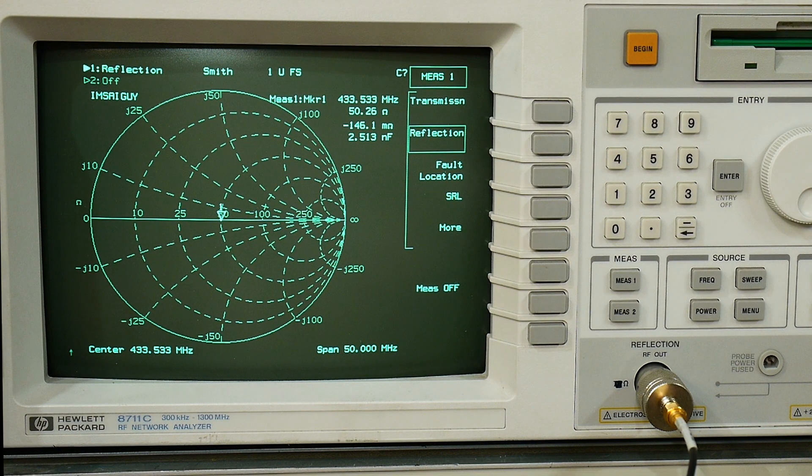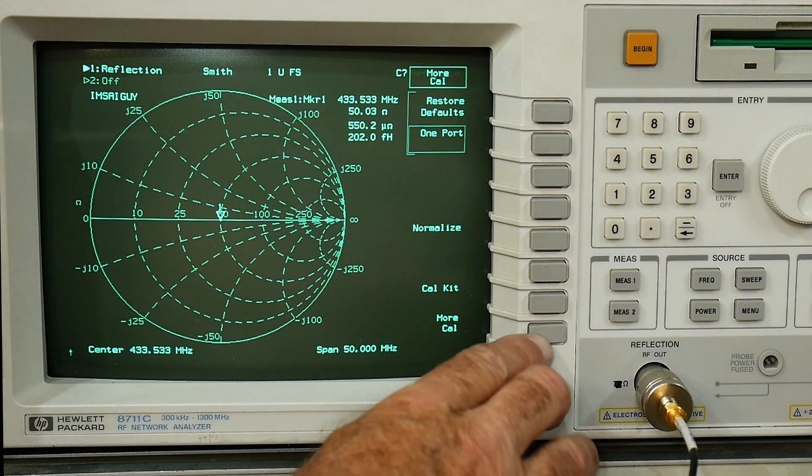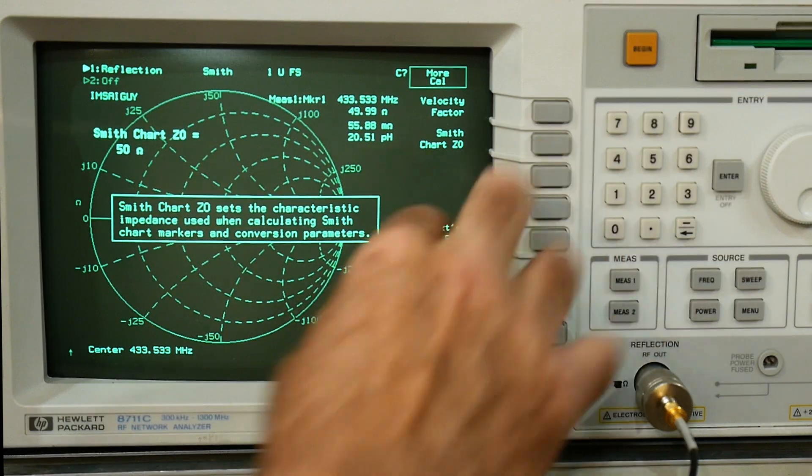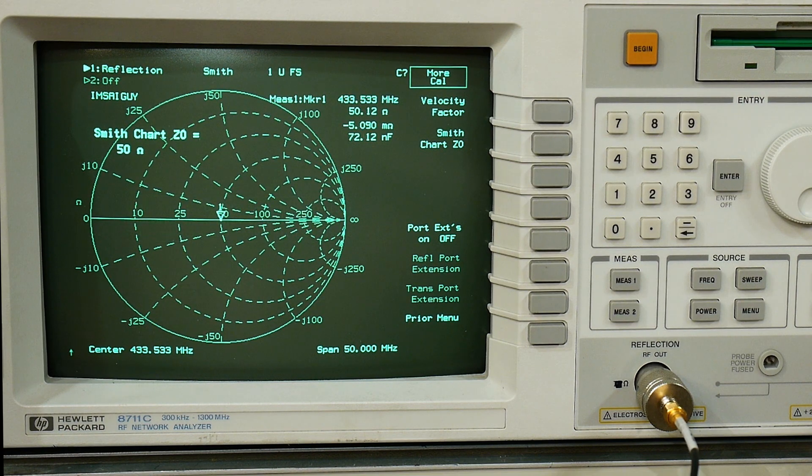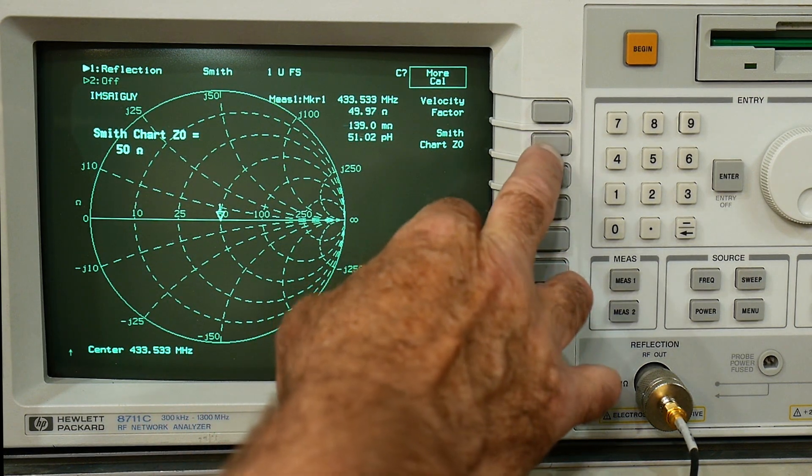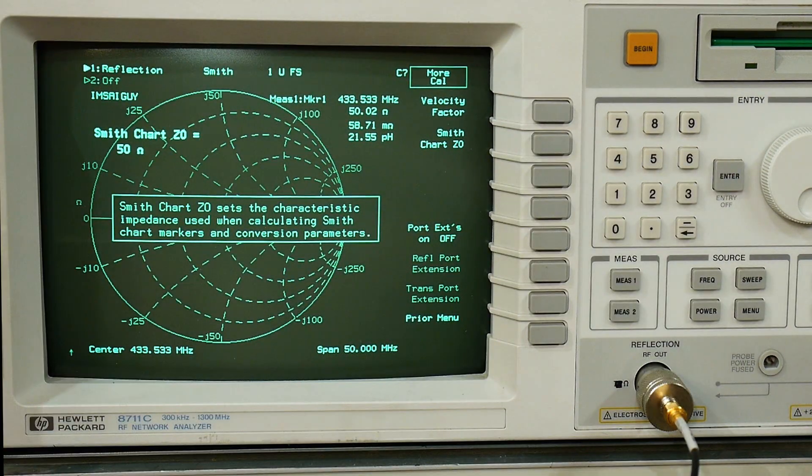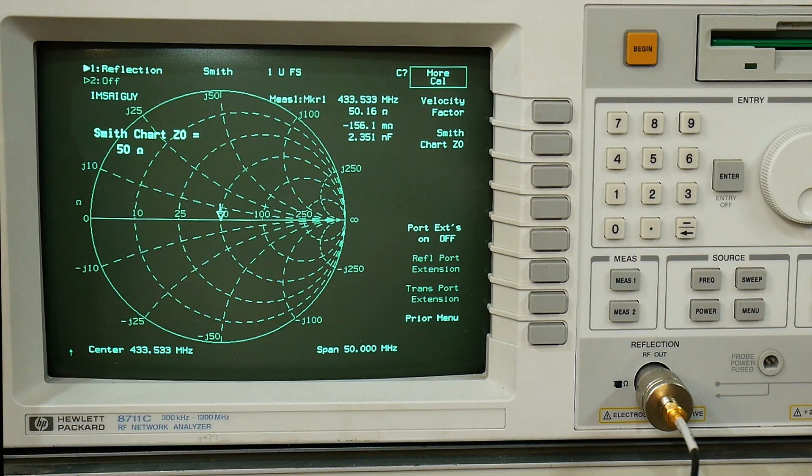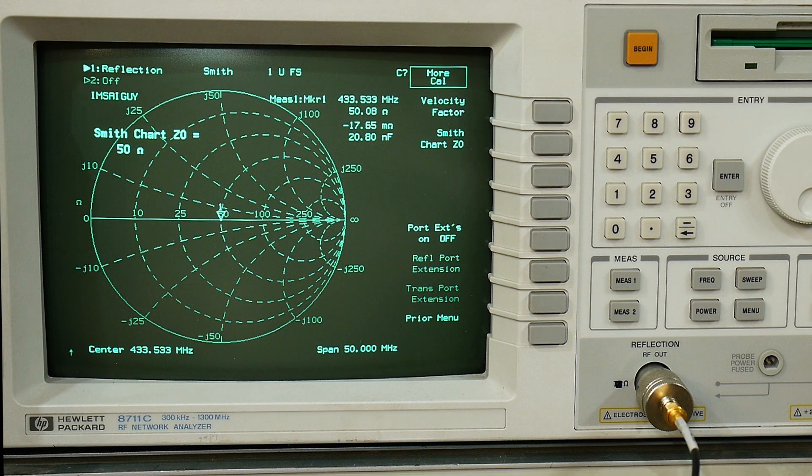So how does it work at 50 ohms if it's a 75 ohm system? Well if you go into cal and you do more cal you can say smith Z0. You can set the center impedance of your VNA. So good VNAs have this where you can just say I want 60 ohms in the center, then you cal it to 60 ohms. Right now it's set to 50 ohms and our load is measuring right there in the center at 50 ohms, so yeah it's working really good.